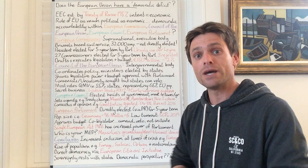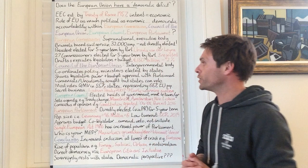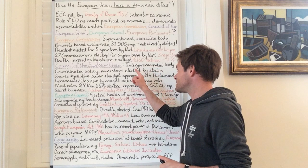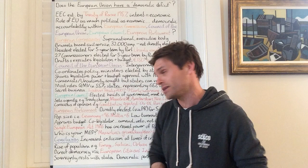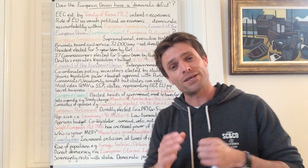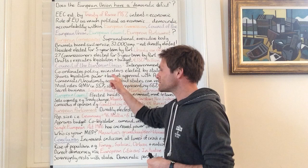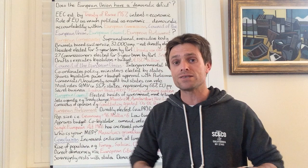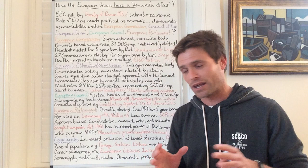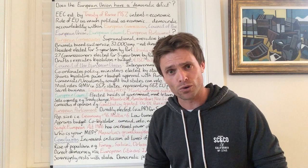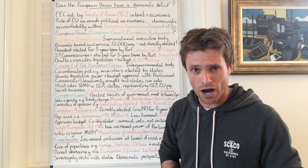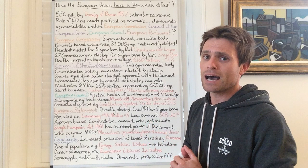Moving on to the Council of the European Union, formerly known as the Council of Ministers. It is an intergovernmental body comprised of ministers from different member states working together to coordinate policy, and it is considered the main decision-making body of the EU. The ministers — whether for agriculture, economic affairs, or home affairs depending on the topic — are not directly elected to the Council, but they must have passed an electoral test within their member states, as they are likely members of national parliaments or other elected bodies.